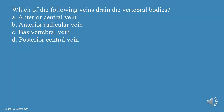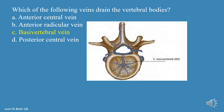Which of the following veins drain the vertebral bodies? a. Anterior Central Vein, b. Anterior Radicular Vein, c. Basivertebral Vein, d. Posterior Central Vein. The answer is c, Basivertebral Vein.